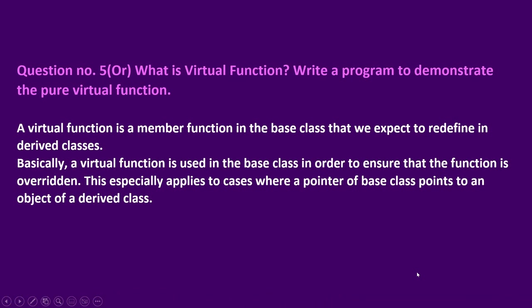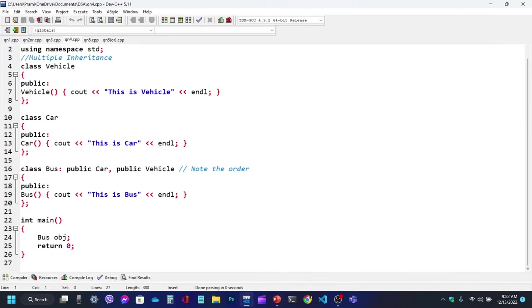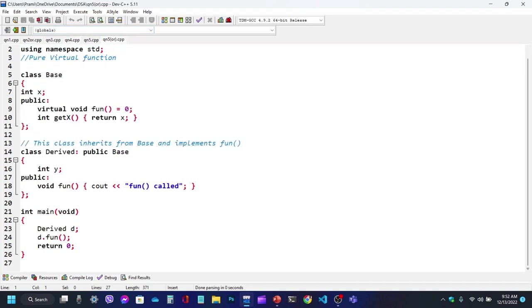Question 5: What is a virtual function? Write a program to demonstrate the pure virtual function. A virtual function is a member function in the base class that we expect to redefine in a derived class. A virtual function is used in the base class in order to ensure that the function is overridden. This especially applies to cases where a pointer of a base class points to an object of a derived class. Now let's look at the example of a pure virtual function.